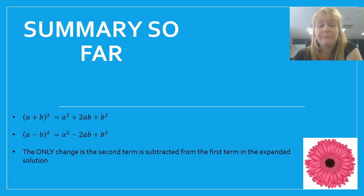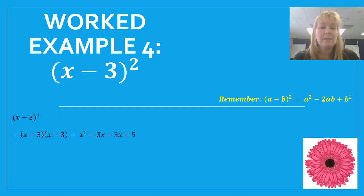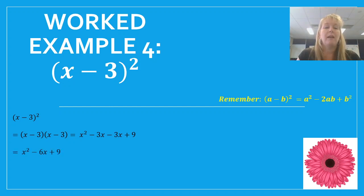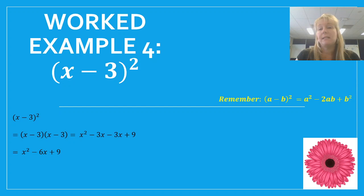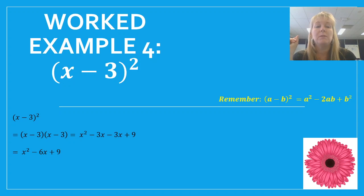Let's do a worked example — x minus 3 all squared — using FOIL. First: x times x is x squared. Outsides: x times negative 3 is minus 3x. Insides: negative 3 times x is another minus 3x. Last: negative 3 times negative 3 is positive 9. Simplifying: x squared take away 6x plus 9. Looking at our yellow pattern on the right: first term squared is x squared, then 2 times 3 times x is 6x but subtracted giving minus 6x, and last term squared is 3 squared which is 9.